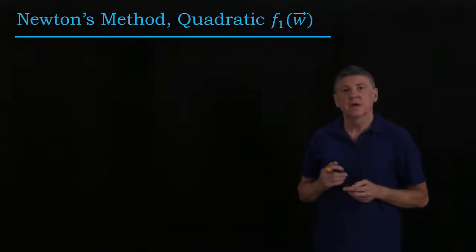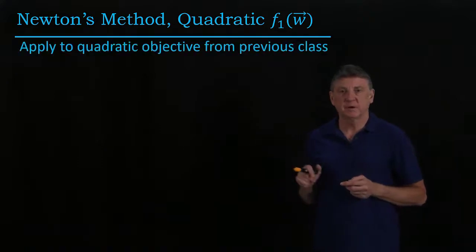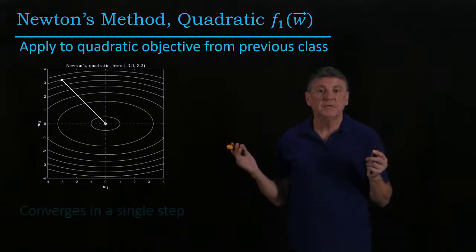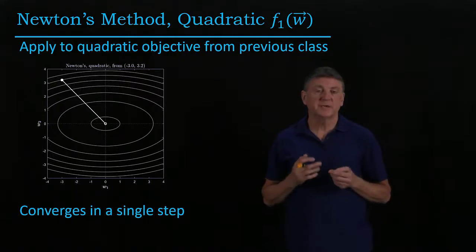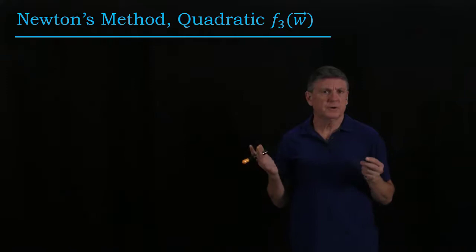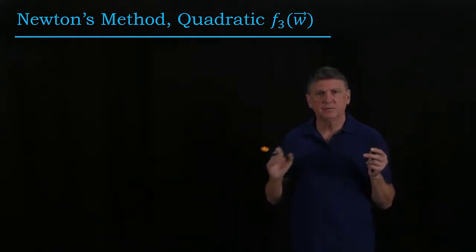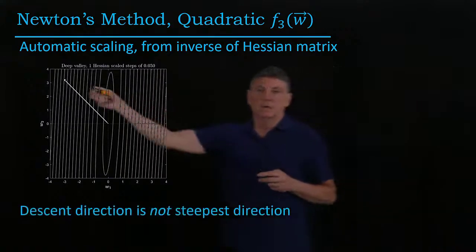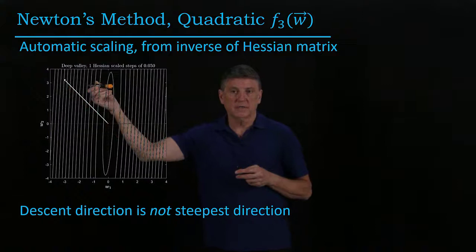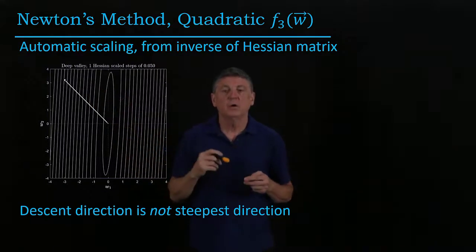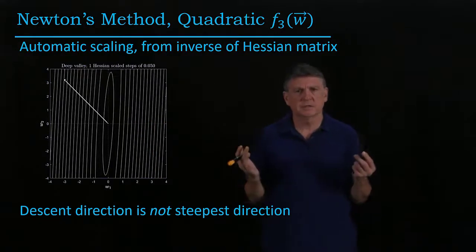Let's visualize how Newton's method performs on the two quadratic functions we've looked at. For the first quadratic with a two-to-one ratio between variables, Newton's method from any numerically reasonable point will jump immediately to the minimizer — converging in a single step — because the second-order approximation is exact for a quadratic. For the quadratic F3, which had a steep valley and a very shallow bottom, Newton's method will automatically scale, descending directly where steepest descent would go perpendicular to the contours and manually selected descent would oscillate.